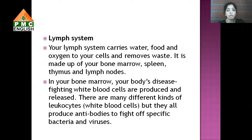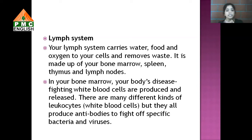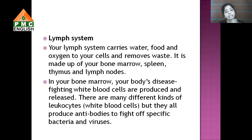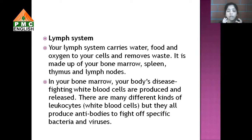Our lymphatic system also takes care — it carries water, food, and oxygen to cells and removes waste. It is made up of bone marrow, spleen, thymus, and lymph nodes. In the bone marrow, disease-fighting white blood cells called leukocytes are produced and released. They produce antibodies to fight bacteria and viruses. So all these components continuously work to ensure no bacteria or virus harms us.